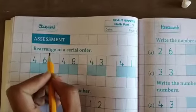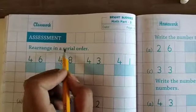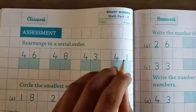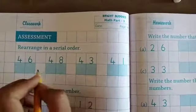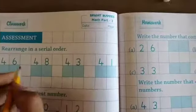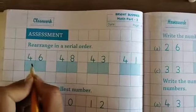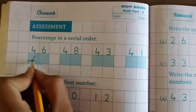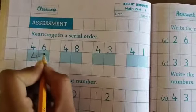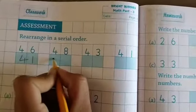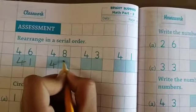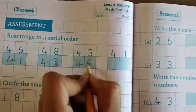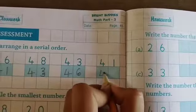In assessment, the first question is rearrange in a serial order. Serial order means ascending order. We must find out the smallest number. The smallest number is 41, then 43, then 46, then 48.